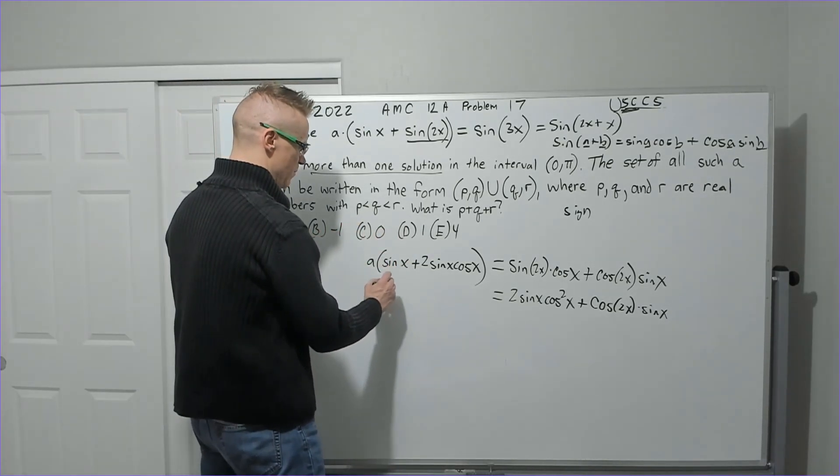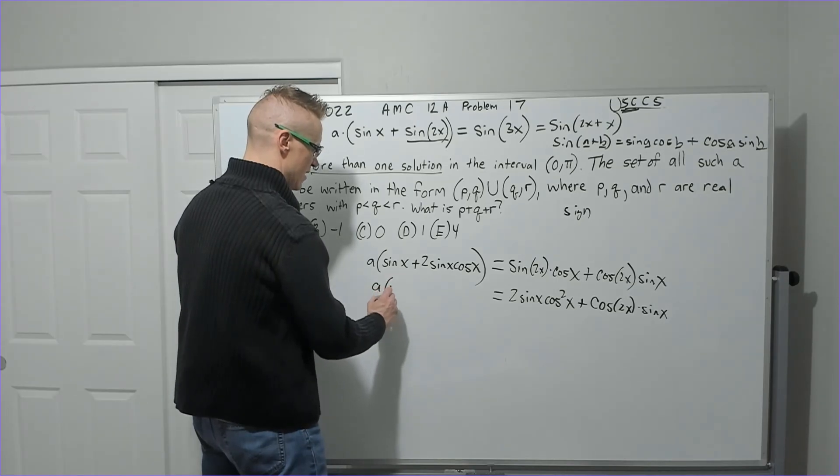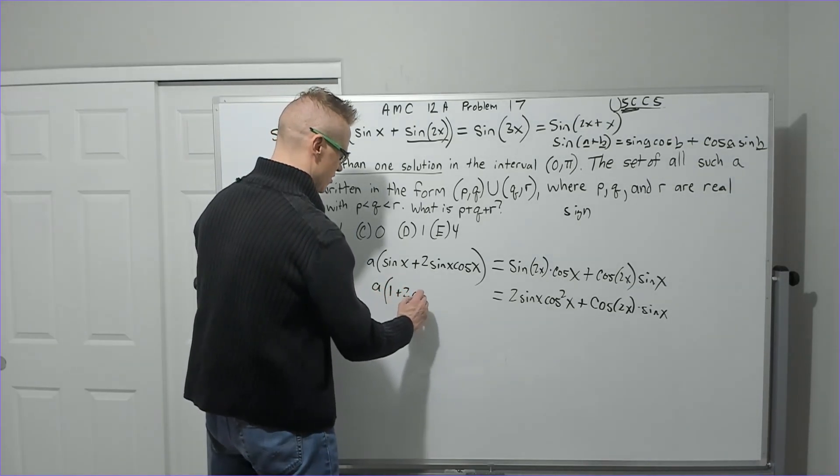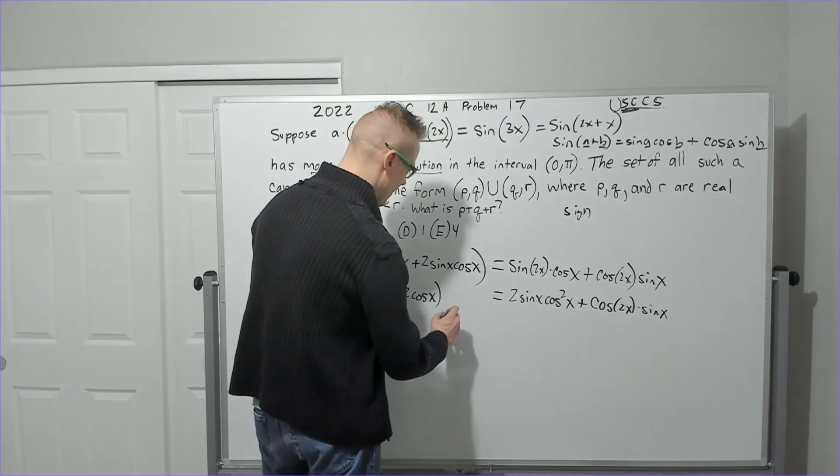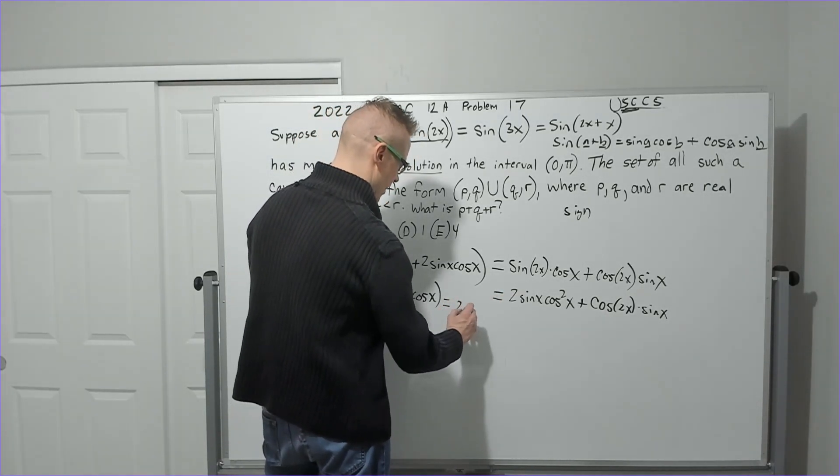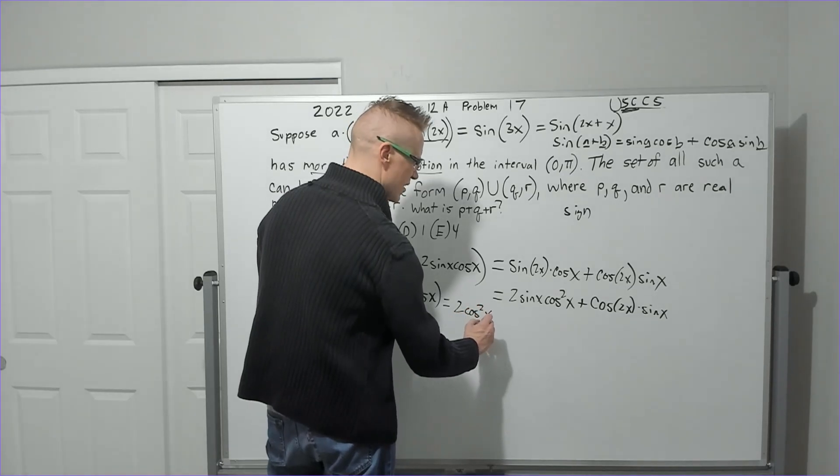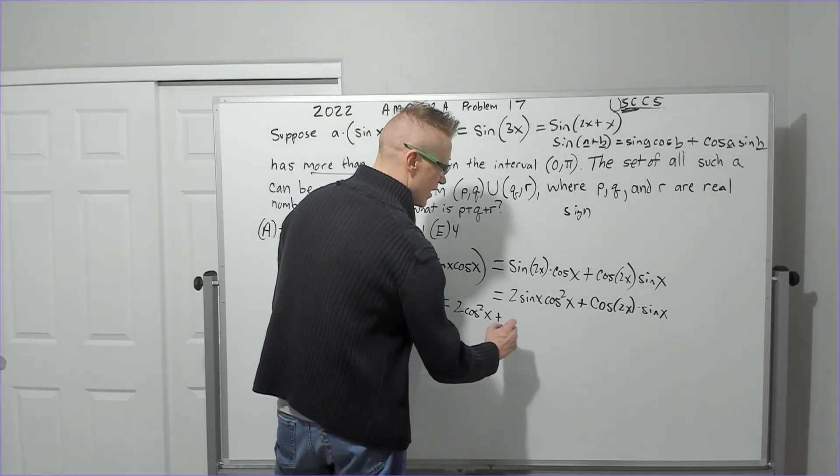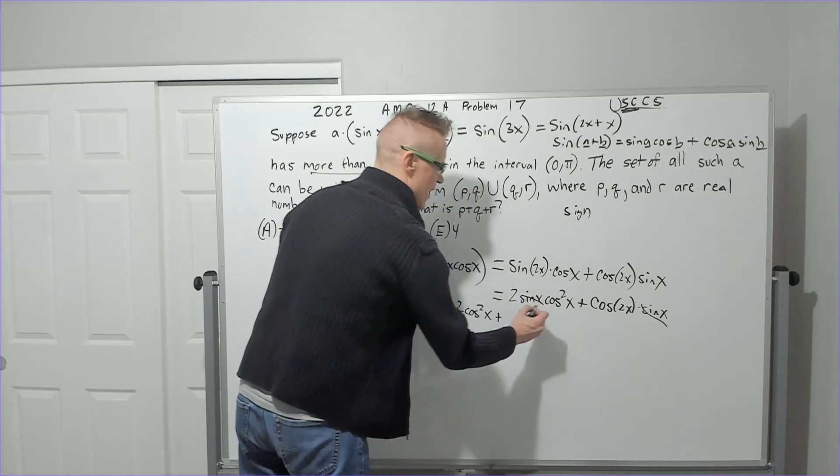But we know that it's not 0, so it doesn't really matter. If you divide by sine of x on both sides, you're going to get A times 1 plus 2 cosine of x. And then this is going to equal, the sine of x goes away. You have 2 cosine squared of x plus that sine of x is gone as well.